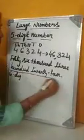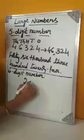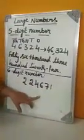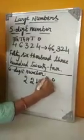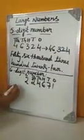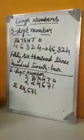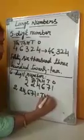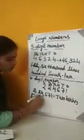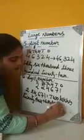Let us take the next example — a 6 digit number. Let us write the place values: 1's, 10's, 100's, 1000's, 10,000's, and lakhs. Let us separate the periods with commas. That is 2 lakhs, 24,671. We will write the number name — that is two lakhs, twenty-four thousand, six hundred and seventy-one.